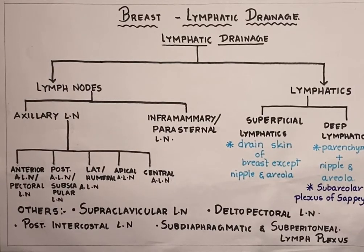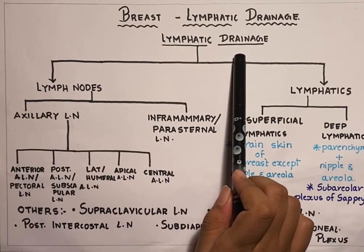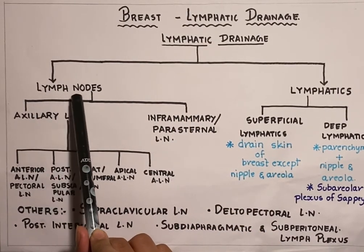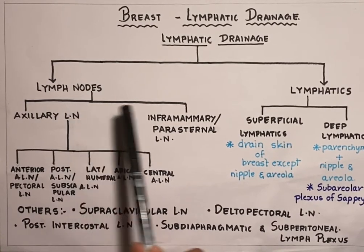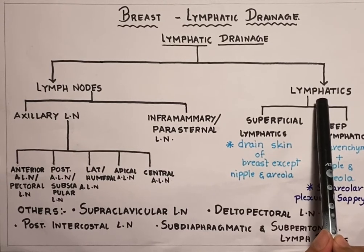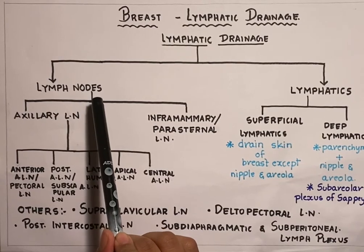Hello everyone, this is Mahanur Ali and welcome to my channel, Learn with Ease. In this video we are going to learn about the lymphatic drainage of the breast. This topic can be covered with the help of two subheadings: the lymph nodes, which are bean-like structures that filter the lymph, and the lymphatics, which are vessels that carry the lymph.